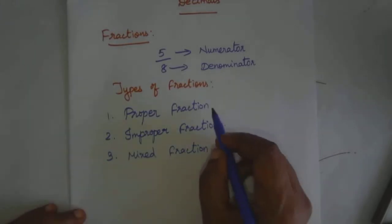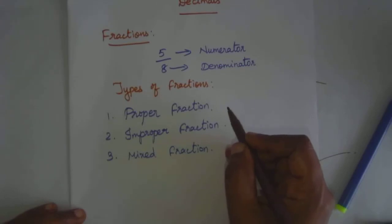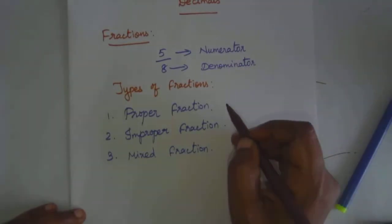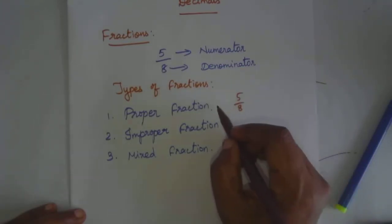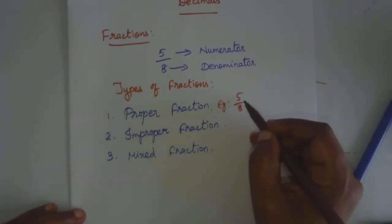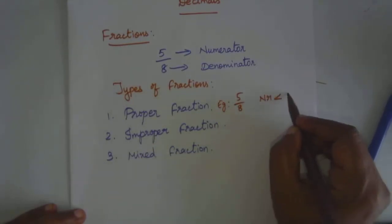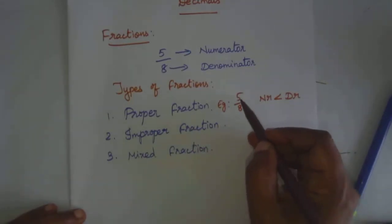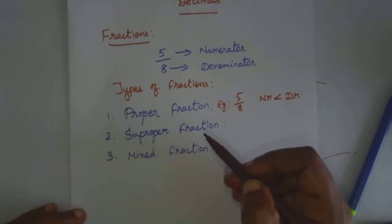Okay, these are the types of fractions. For example, proper fraction: a proper fraction is one where the numerator value is less than the denominator. So 5 by 8, for example, 5 by 8 is a proper fraction. Because the rule is: numerator is less than denominator. This is called a proper fraction. Numerator 5 is less than 8, so it is a proper fraction.